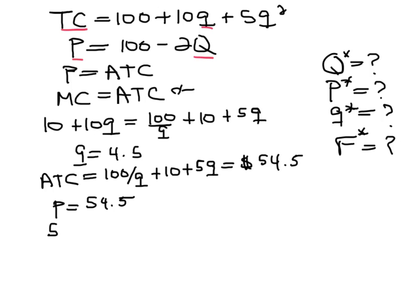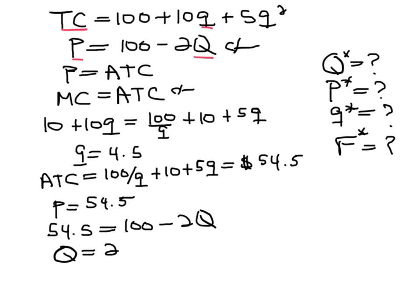Now that we have the average total cost, we know the price also equals the average total cost: 54.5. So we can replace that 54.5 for P into our demand equation — 100 minus 2Q — to find the value of big Q, which turns out to be 22.75, around 23 units.